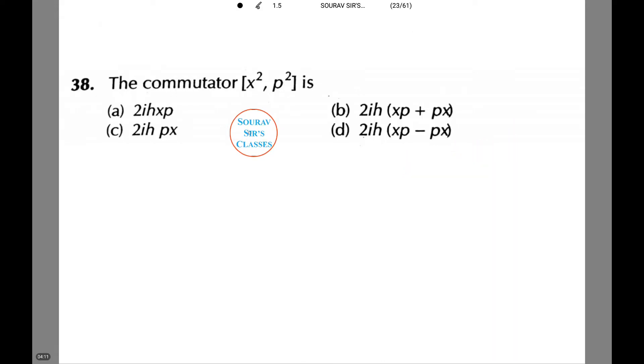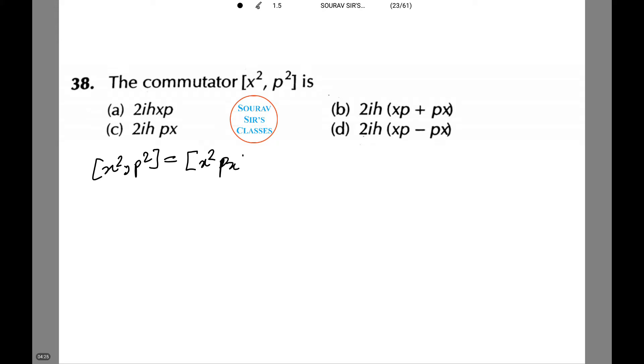Now, the commutator [x², p²] is... Let's see how to do this. [x², p²] equals [x², px² + py² + pz²], or [x², p²] equals [x², px²] + [x², py²] + [x², pz²].